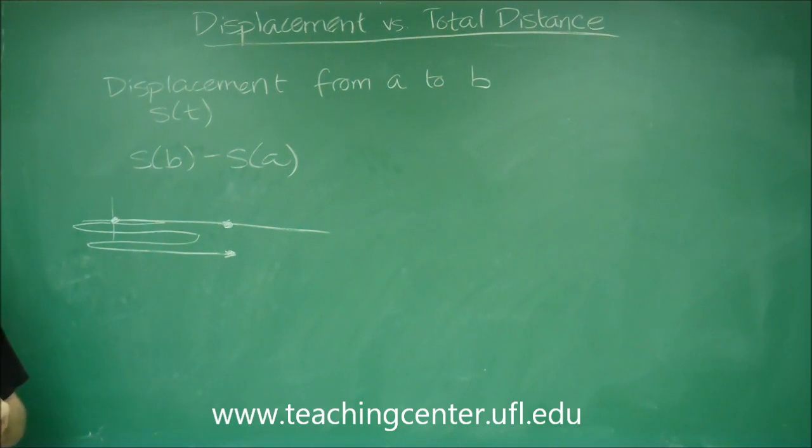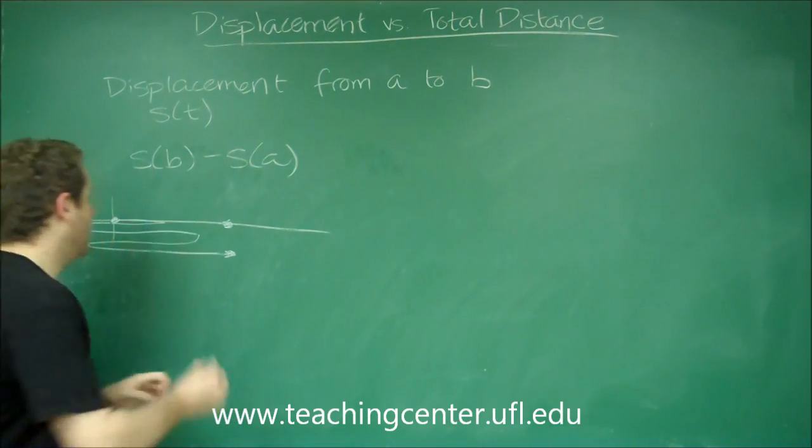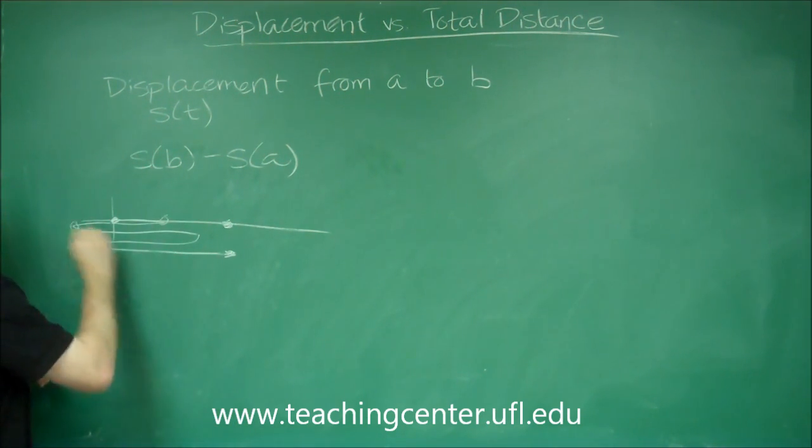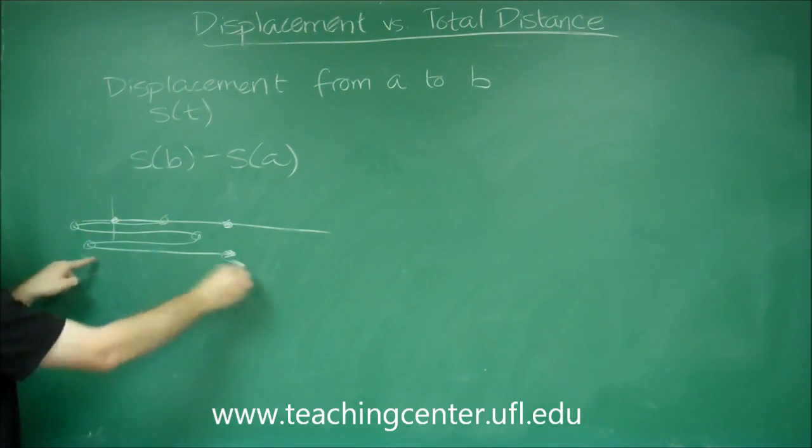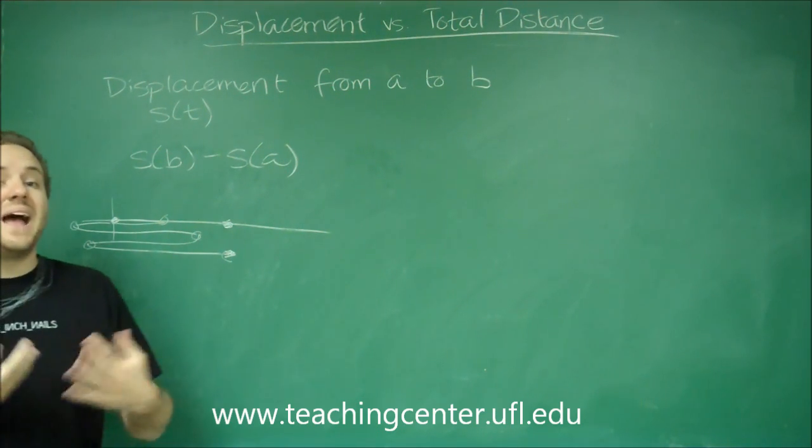So how do you find the total distance? You need to figure out where did you turn around - all these turning around points - and measure the distance of each gap on its own, and then add them all together.